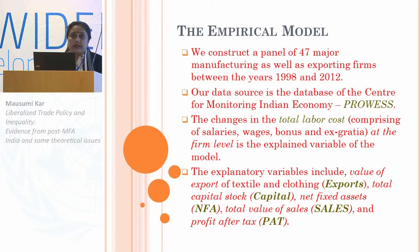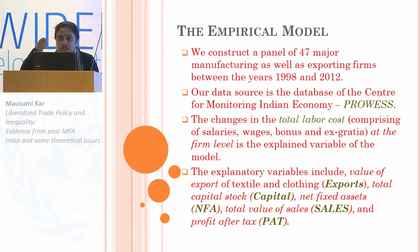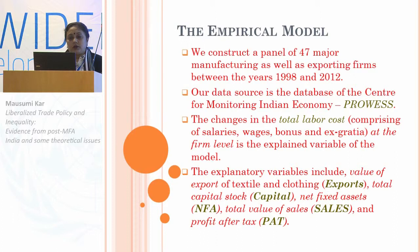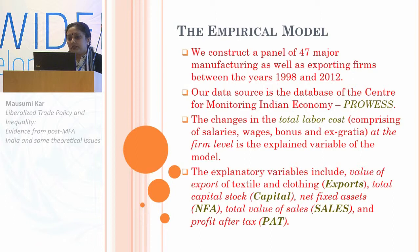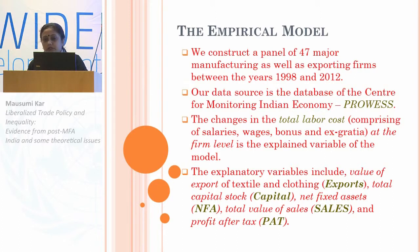There were actually 750 firms in our database, but we chose these 47 on the basis of criteria that each firm has more than the mean output level for each year in total sales value. Our data source is the CMIE — Center for Monitoring Indian Economy — database. The explained variable is the change in total labor cost, and the explanatory variables include the value of textile and clothing exports, capital stock, NFA (net fixed assets), total value of sales, and profit after tax. A number of interaction terms are also incorporated to measure the relative strength of each variable.